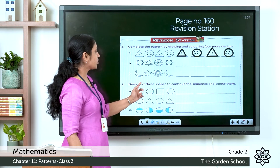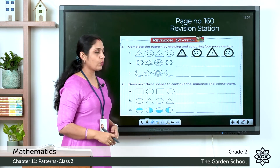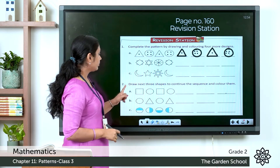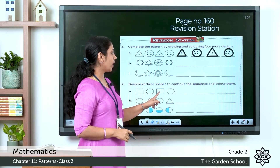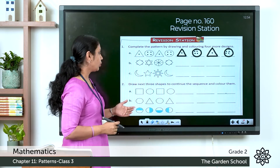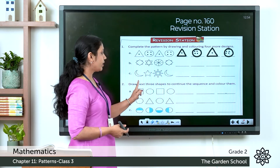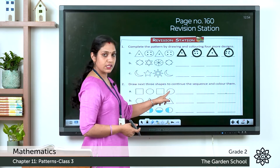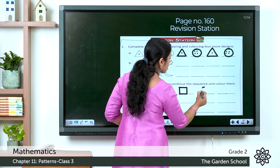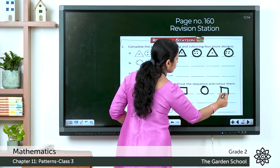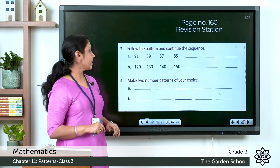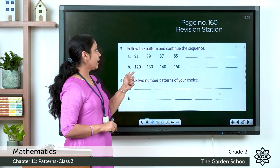Question two: draw the next three shapes to continue the sequence and color them. In part (a), the sequence is square, circle, square, circle. The next shapes will be square, circle, square. Similarly complete the rest of the exercises.